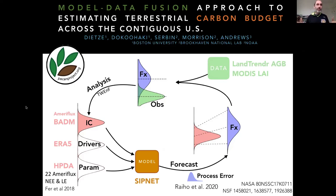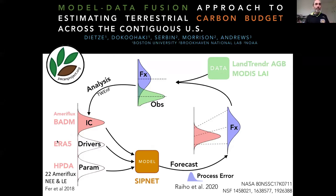How do we do this? We do this through the forecast analysis cycle to generate the carbon cycle equivalent of a reanalysis product, where we're fusing observations together over a historical time period to come up with our best estimate of what happened in the past.